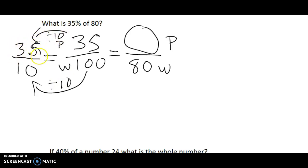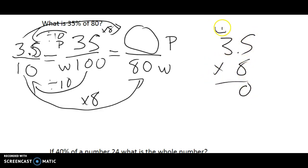If I was to simplify this by dividing top and bottom by 10, what I'd end up with would be something like this. I would end up with 100 divided by 10 being 10, and 35 divided by 10 being 3.5.